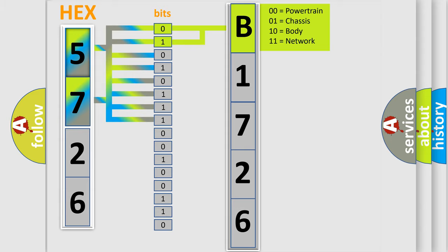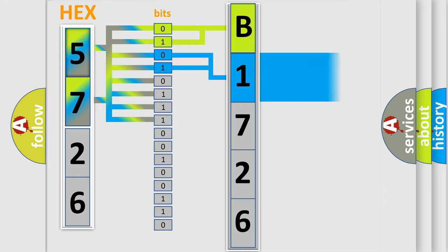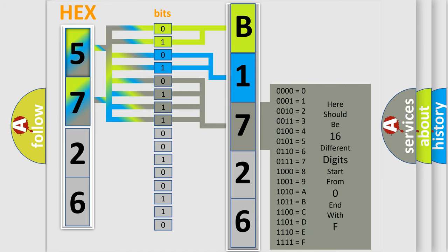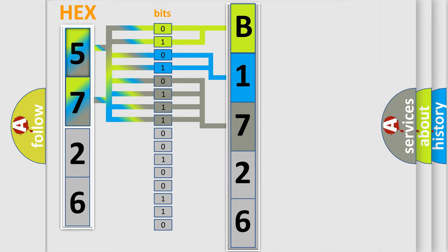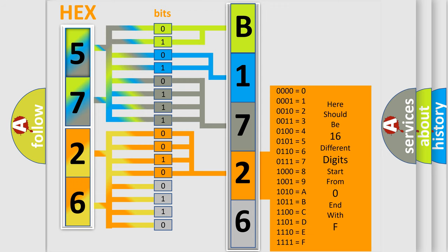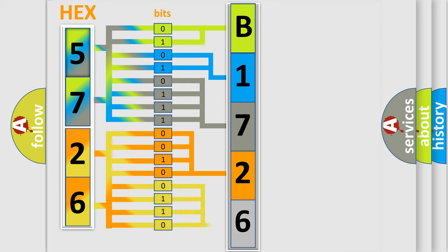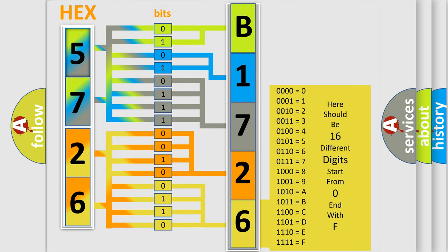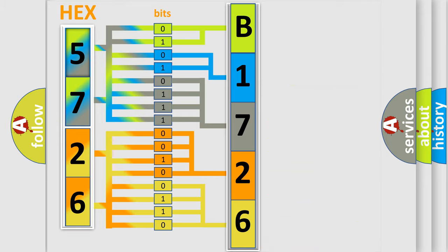By combining the first two bits, the basic character of the error code is expressed. The next two bits determine the second character. The last bits of the first byte define the third character of the code. The second byte is composed of a combination of eight bits — the first four bits determine the fourth character, and the last four bits define the fifth character. A single byte conceals 256 possible combinations. We now know in what way the diagnostic tool translates the received information into a more comprehensible format.